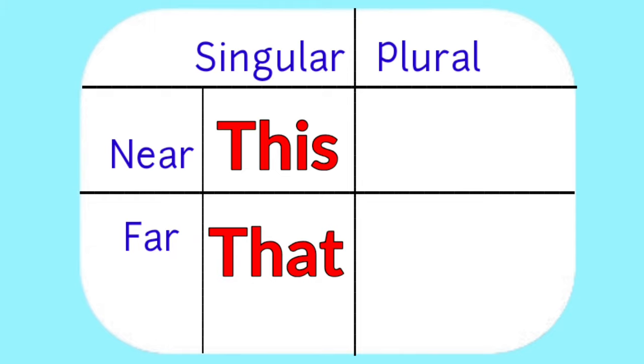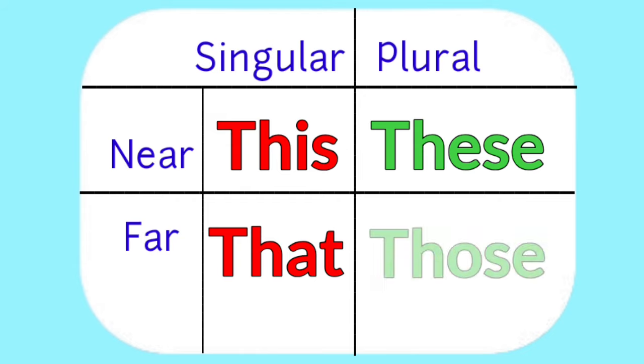In plural nouns, if many objects are near to us, we use these. And if many objects are far from us, we use those.